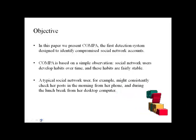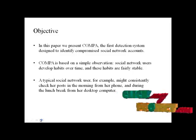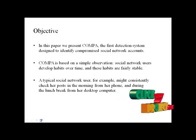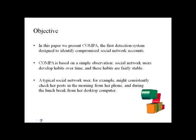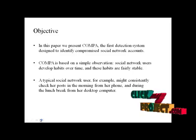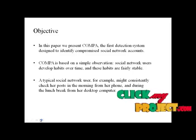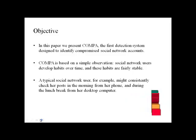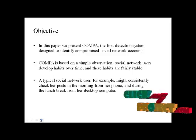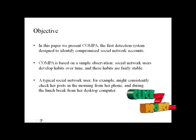We present COMPA, the first detection system designed to identify compromised social network accounts. COMPA is based on the observation that social network users develop habits over time, and these habits are fairly stable. For example, a typical user might consistently check posts in the morning from their phone and during lunch from a desktop computer. The main objective is to detect compromised accounts in a social network.